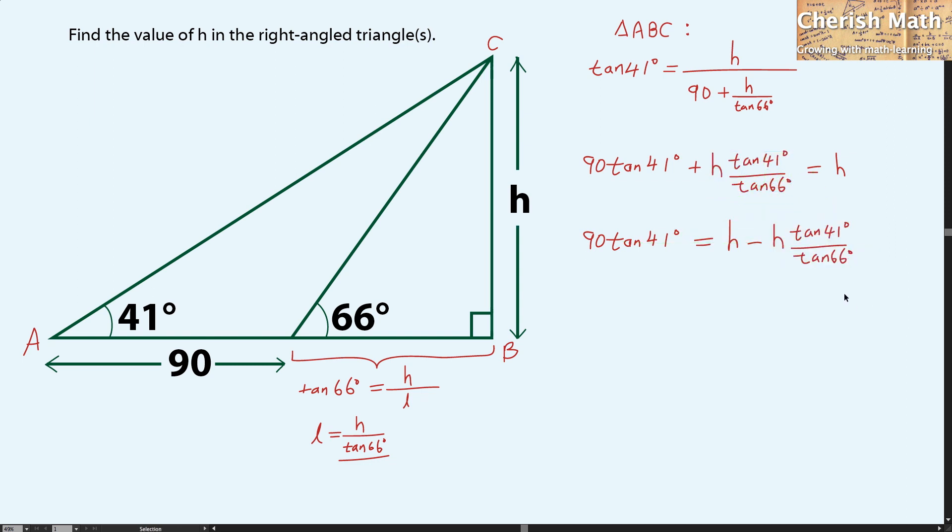And this is how it turns out. I'm going to factor this part. Now, that would be 1 minus tan 41 degrees divided by tan 66 degrees, and the whole thing is going to multiply with H.